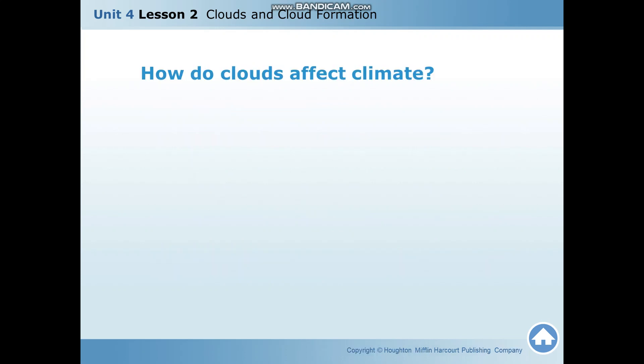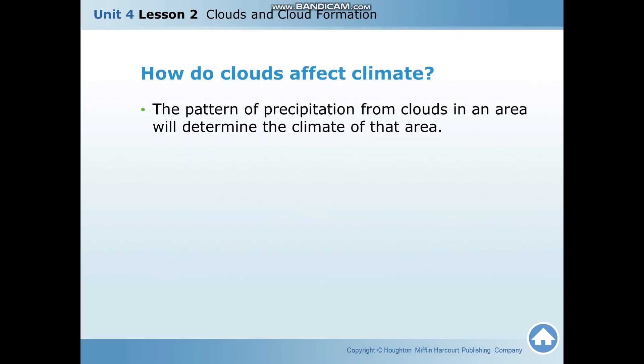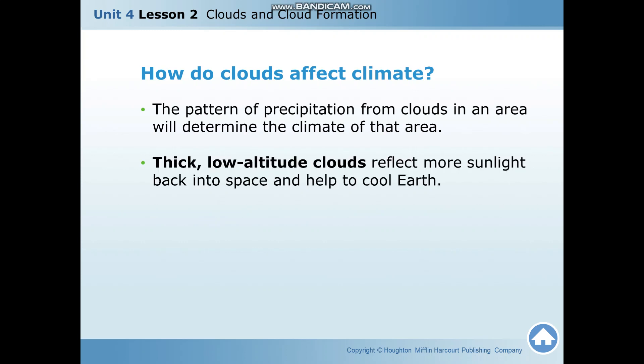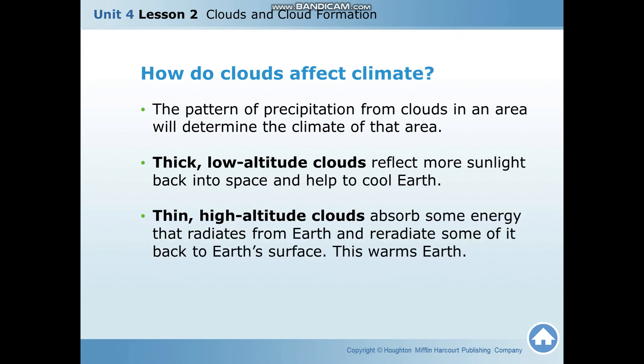How do clouds affect climate? The pattern of precipitation from clouds in an area will determine the climate of that area. Thick low-altitude clouds reflect more sunlight back into space and help to cool Earth. Thin high-altitude clouds absorb more energy that radiates from Earth and re-radiate some of it back to Earth's surface, which warms Earth.